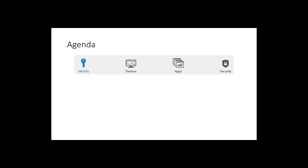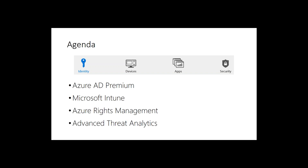What is the Enterprise Mobility Suite? It is a combination of products that manage identity, devices, applications, and security. It provides four major products: Azure AD Premium, Microsoft Intune, Azure Rights Management, and Advanced Threat Analytics. The key takeaway is that EMS is a suite of existing Microsoft products which you could buy individually but are bundled together into one package.